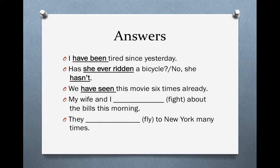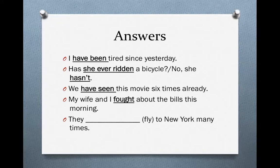'We have seen this movie six times already.' Present perfect again. Why? Because we don't know when they saw the movie — we know they saw it already, in the past, six times, but we don't know when those six times were. So we can't use the simple past. Next: 'My wife and I fought about the bills this morning.' Simple past. Why? Because of 'this morning' — we know when this event happened. It's finished and we know when it happened. Simple past.